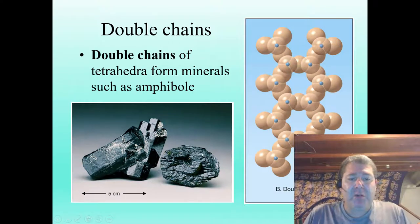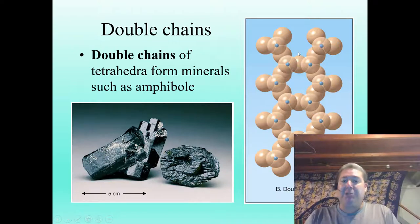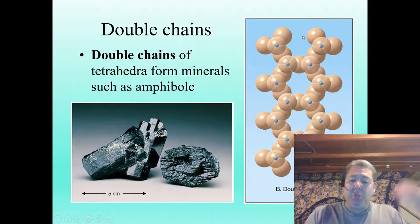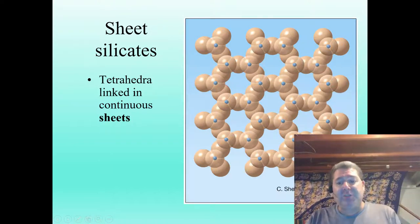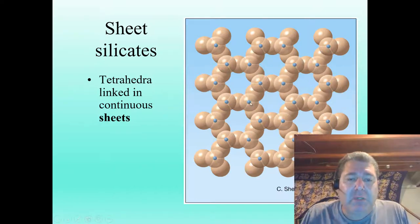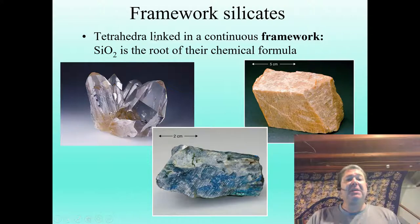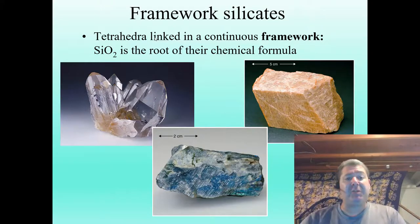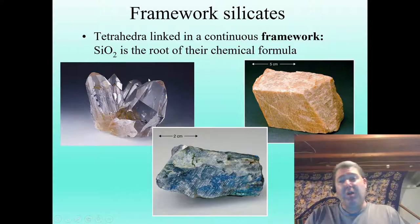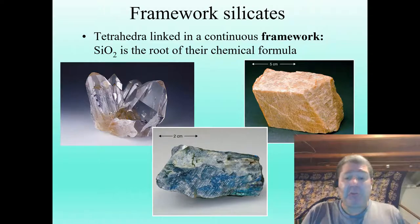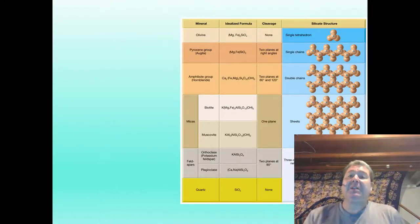Sheet silicates have tetrahedra linked into networks of sheets — our mica minerals that peel into sheets. Framework silicates have tetrahedra tightly linked in a three-dimensional network, with SiO2 as the root formula for quartz. So we've gone from olivine's SiO4 to quartz's SiO2 — effectively doubling the ratio of silicon to oxygen as these minerals crystallize out of cooling magma.